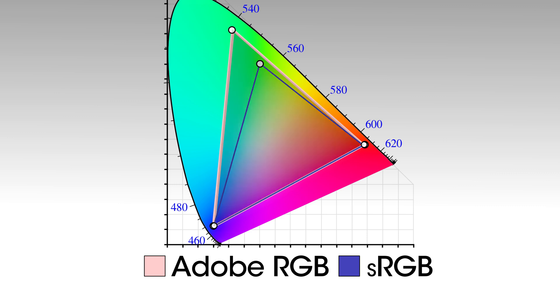If you had an AdobeRGB display, you could accurately display every color in sRGB space. But if you try to do the reverse, there are not enough colors to represent this larger space. But there are ways around this.